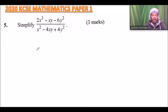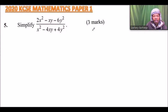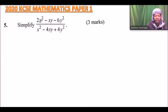This is question number five. We are told to simplify 2x squared minus xy minus 6y squared, divided by x squared minus 4xy plus 4y squared. For us to be able to do this, we need to factorize the quadratic expressions and then simplify. Since we have x and y, we consider y as a constant.